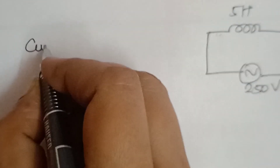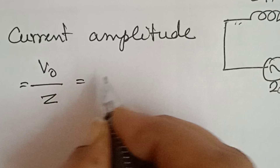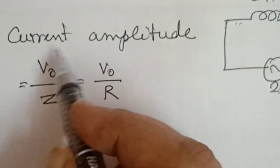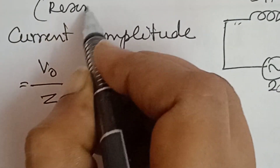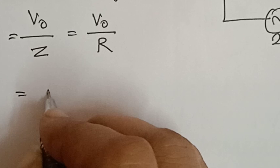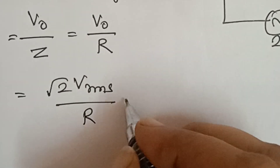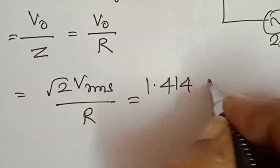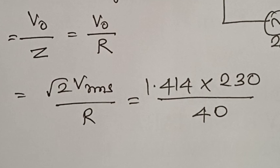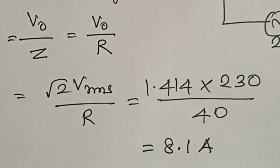Current amplitude formula is V0 by Z. Since Z equals R at resonance, current amplitude equals V0 by R. V0 peak voltage is equal to root 2 into Vrms. So, V0 equals root 2 into Vrms by R. Root 2 is 1.414, and Vrms is 230V. So, 1.414 into 230 divided by 40. We calculate the value as 8.1 Amperes.